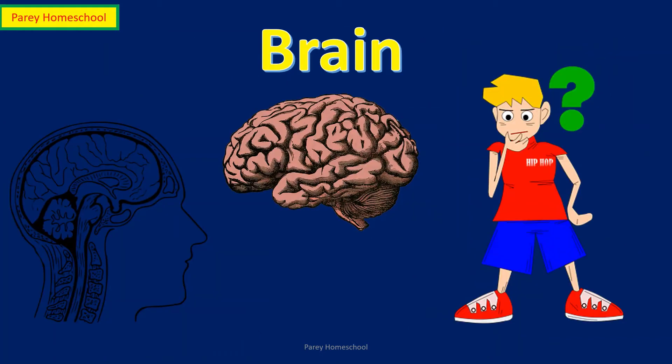Brain. Our brain is in our head. It helps us to think and it controls all other parts of our body. It also controls our heart, memory, emotion, touch, vision, breathing, temperature, hunger, and every process that regulates our body.